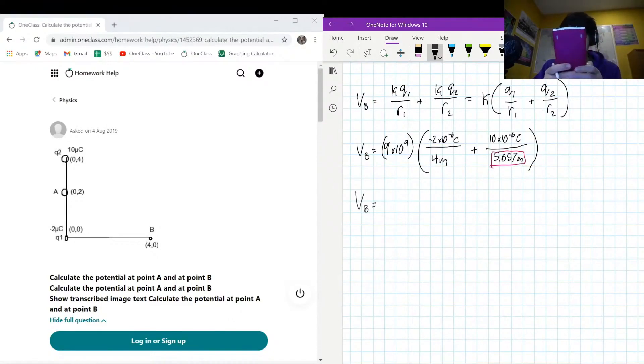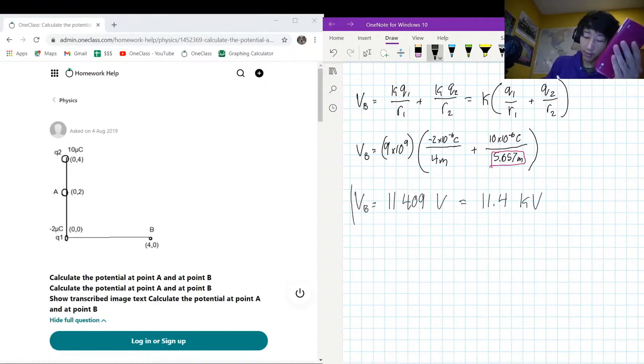Let's send this into my calculator and figure out exactly what this calculation is going to be. So we got 9 times 10 to the power of 9 times, in brackets, it's negative 2 divided by 4 plus 10 divided by 5.657. So we have to convert them to micro. And my calculation for this is going to be 11,409 volts. So another way that we can write this is 11.4 kilovolts. And this would be our potential as observed from B.